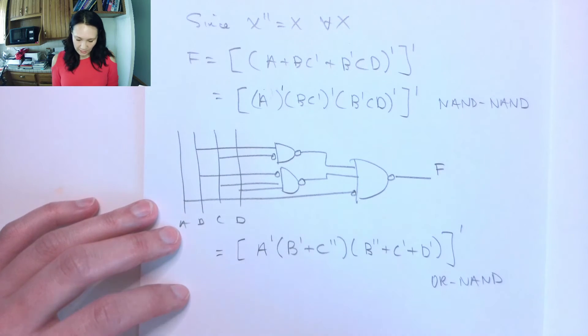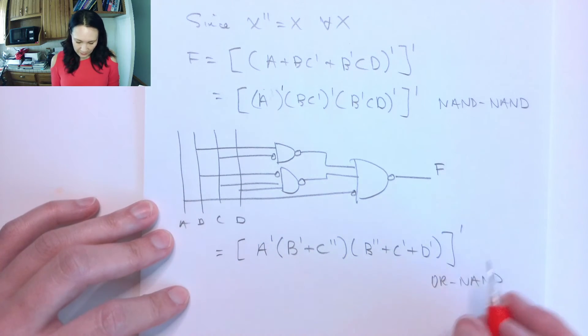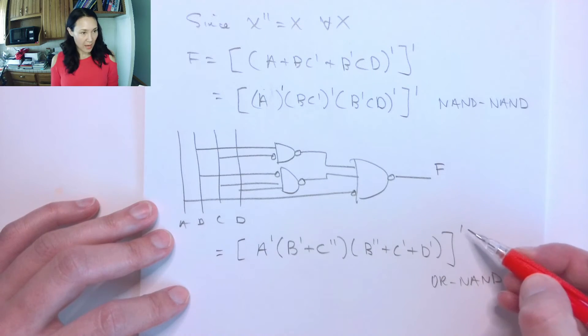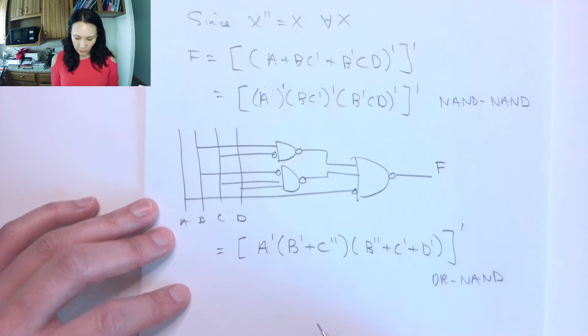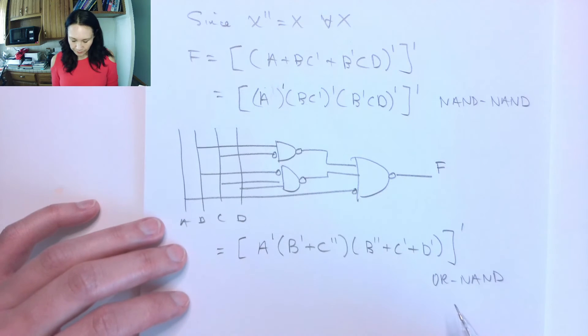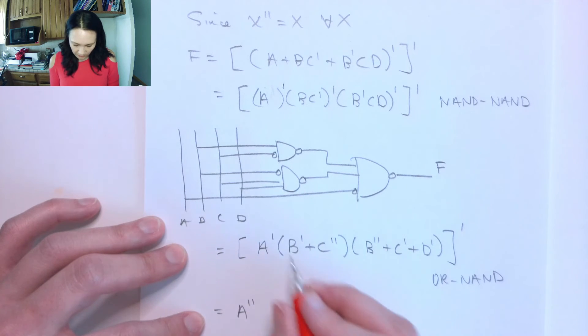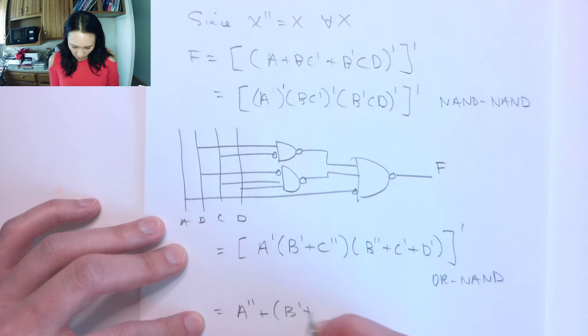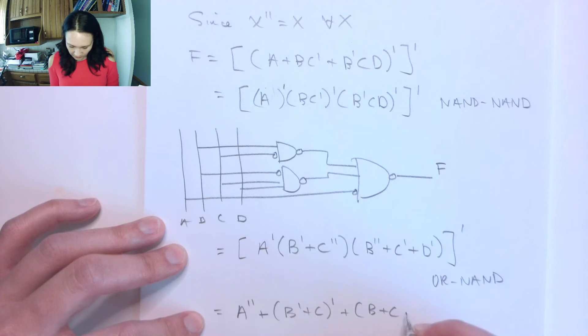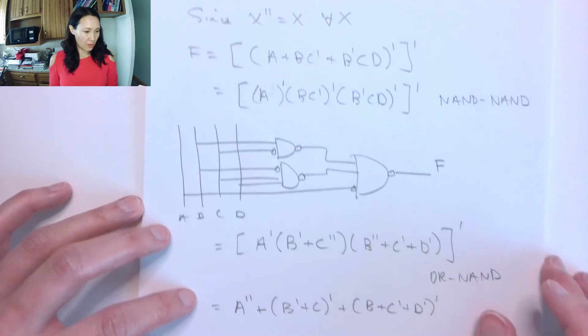And we arrived at this by applying De Morgan's twice from our original function. Now we can actually continue if we apply De Morgan's again. Now with this outer NOT, we can get to an even different implementation of our circuit. So if I apply De Morgan's using this outer NOT, this is going to be A NOT A NOT NOT, I'm going to change this AND to an OR, B NOT OR C NOT OR B OR C NOT OR D NOT NOTED.